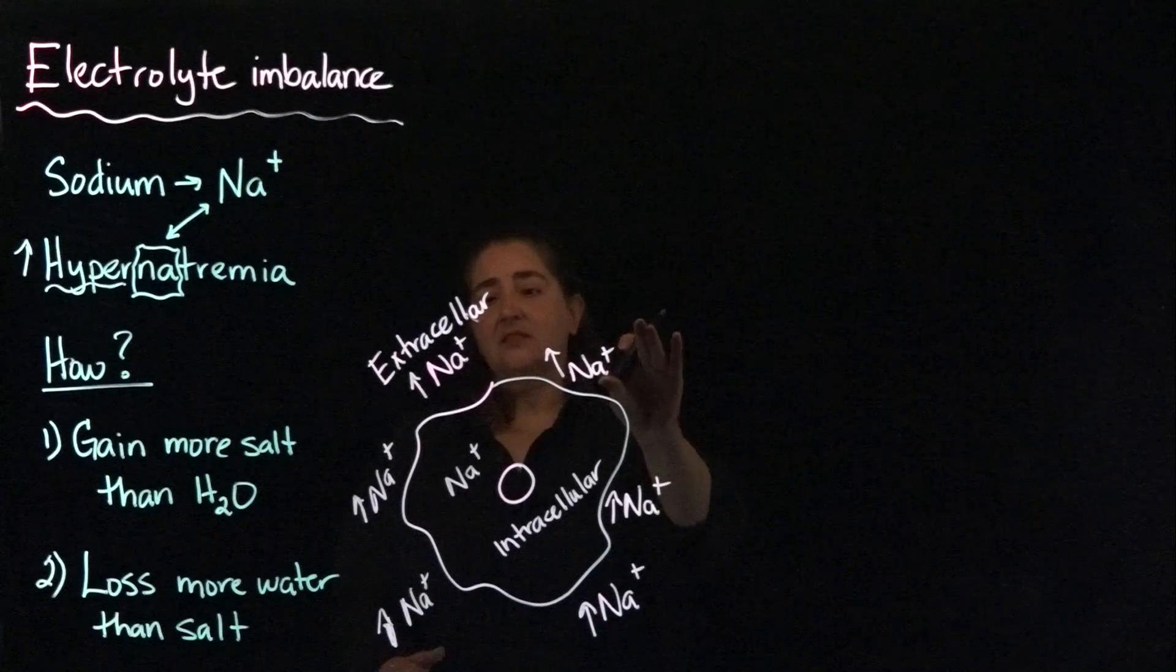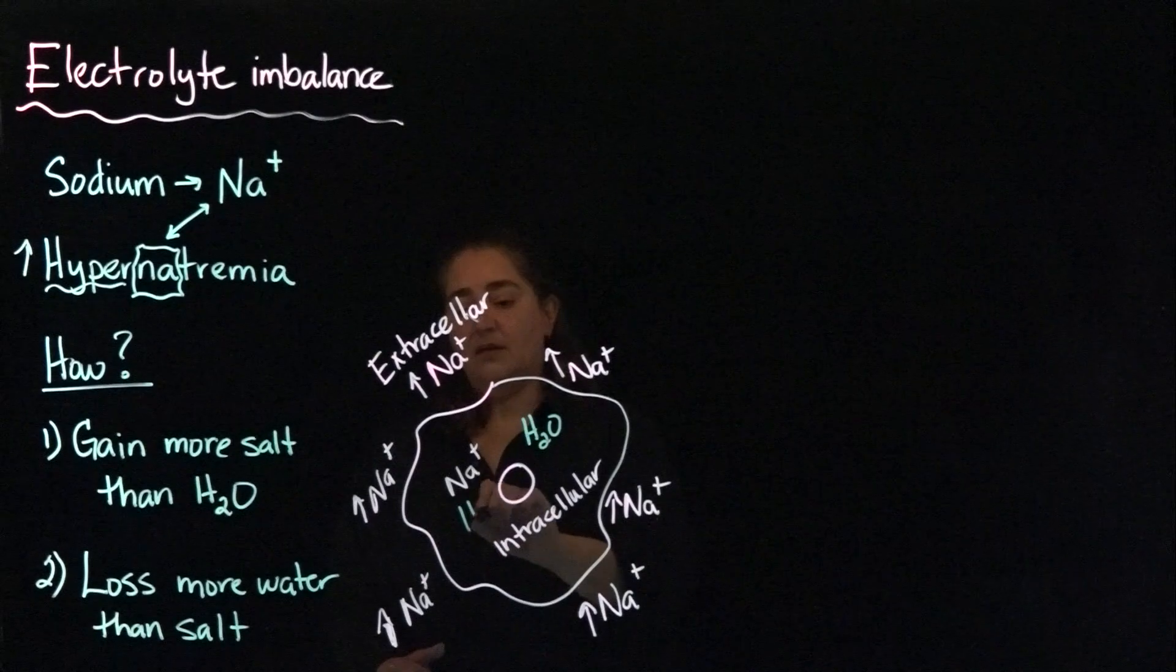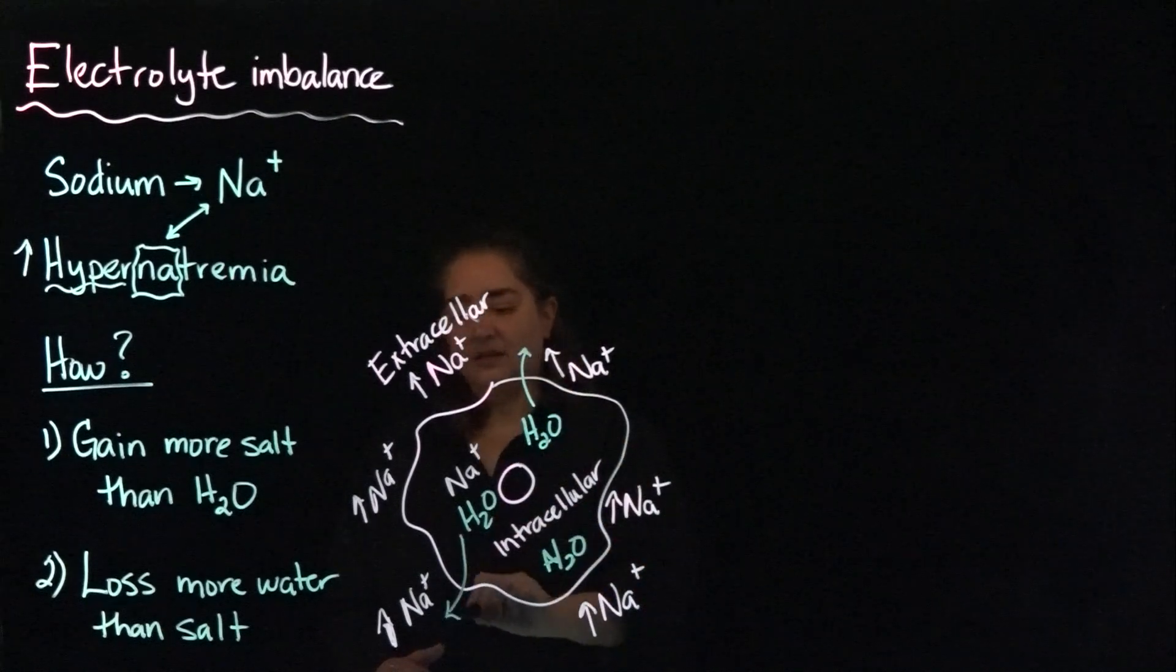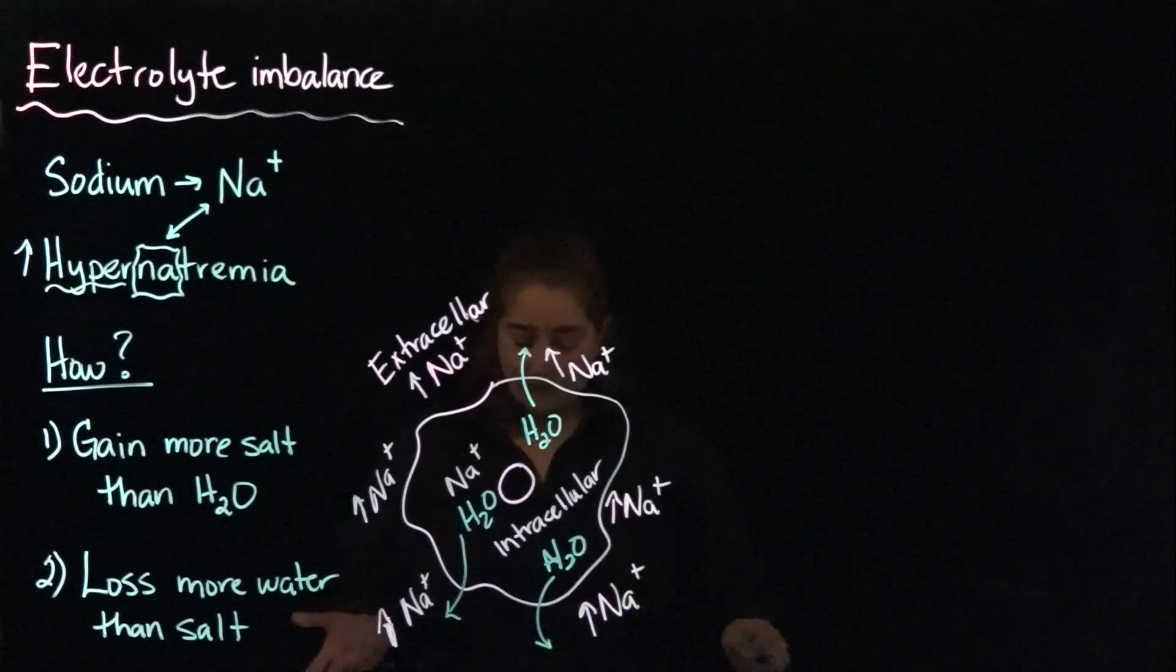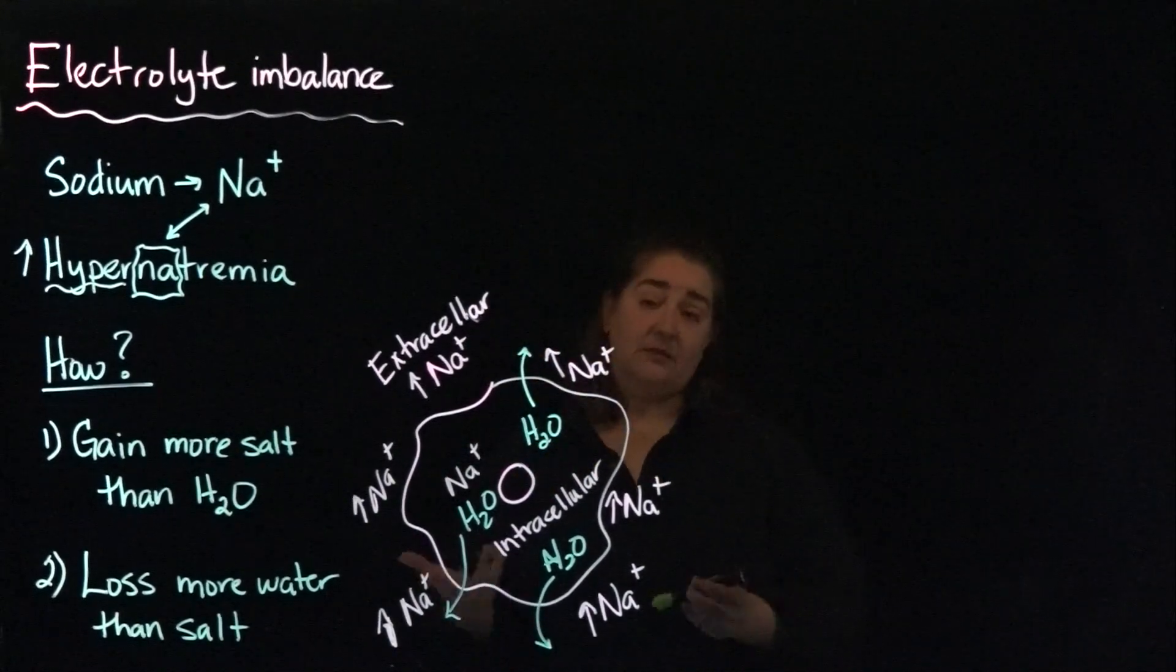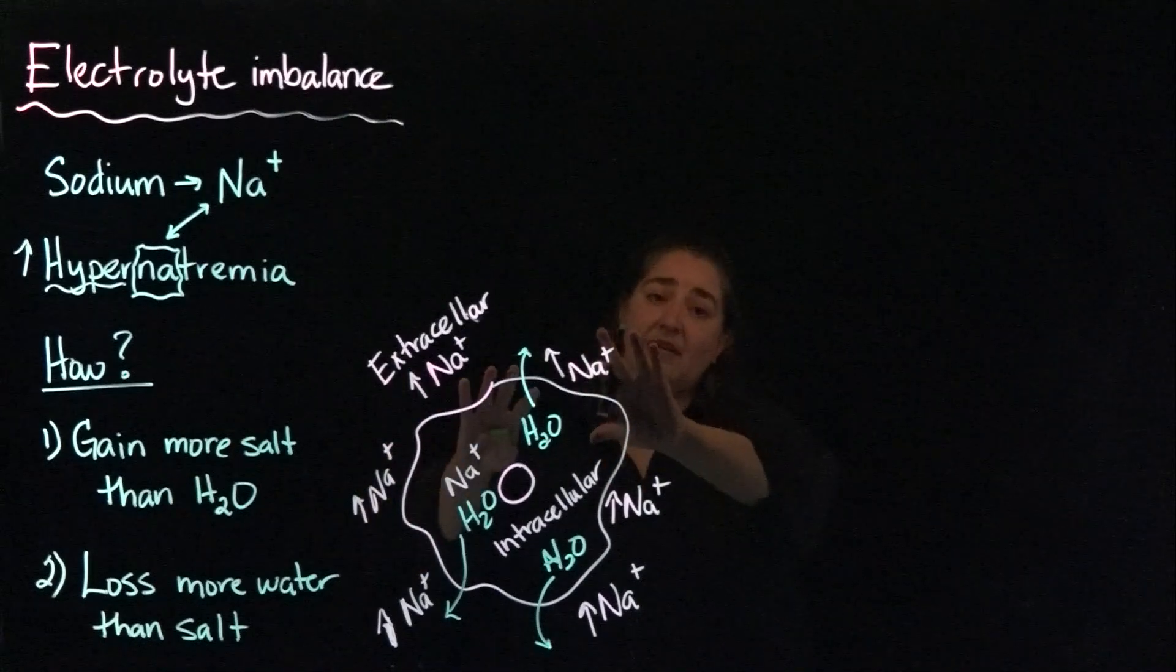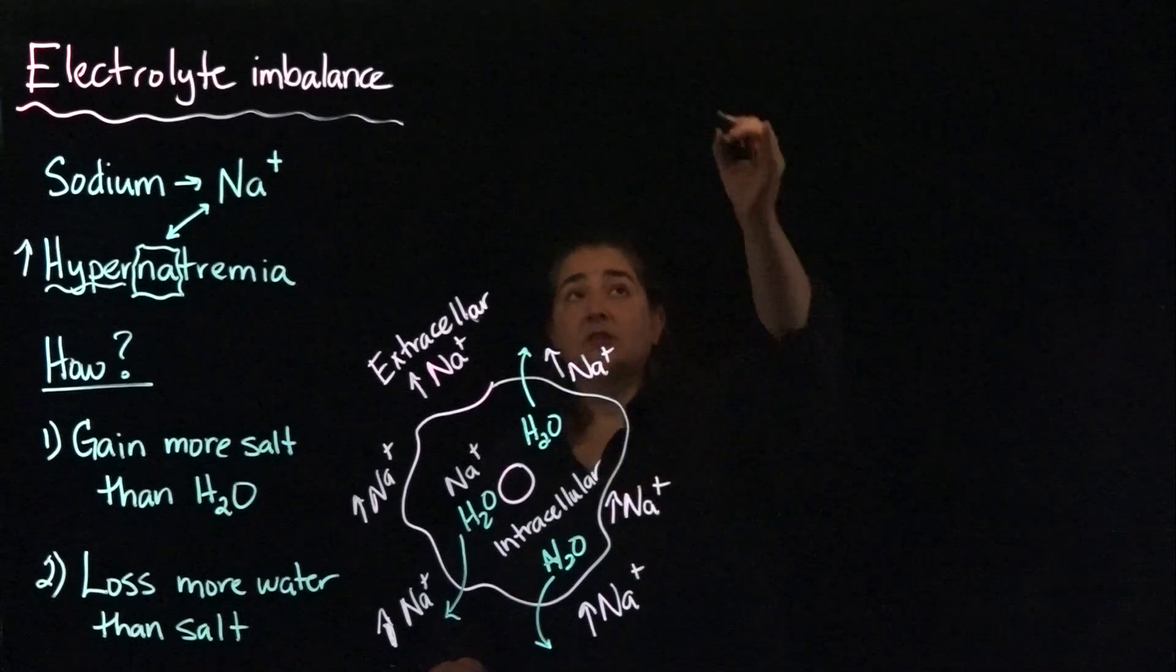So we've got excess sodium in the extracellular space, and what that's going to do - because water likes to follow sodium - our water is going to move outside of our cell. That clinically ends up resulting in some dehydration, because you've got loss of water from the cell. The body is trying to stay in homeostasis to maintain the correct sodium balance. So that's what's happening as far as our mechanism.